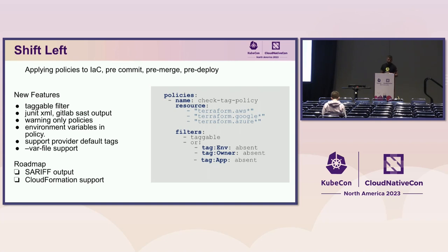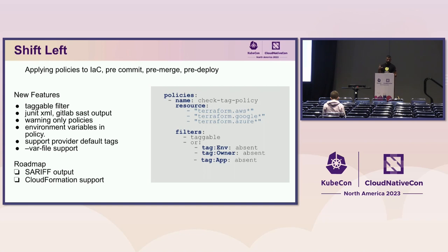From a policy language perspective, shift-left has a few more capabilities because we're operating entirely on an in-memory graph. For example, you can write one policy across multiple cloud providers that enforces your tag standard. In regular Custodian, you have to write a separate policy for each resource, but in shift-left, you can write a generic policy for this use case across all resources.